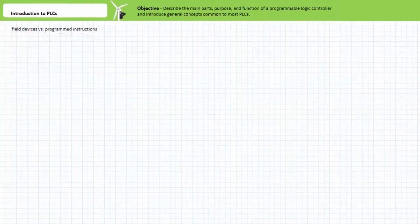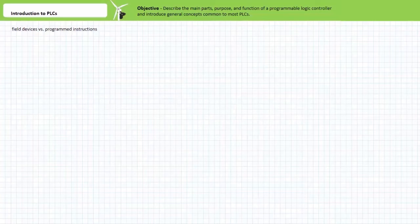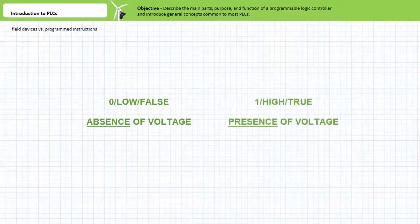An important concept central to all PLCs is the difference between field input and output devices and programmed instructions. A field device is that physical switch or coil that really exists and really interfaces with the real world. A programmed instruction in contrast is the symbolic representation and result in manipulation of input and output status used by the PLC program to make decisions. The values manipulated by a PLC are logical states symbolized by 0, low or false being the absence of voltage and a 1, high or true being the presence of voltage.